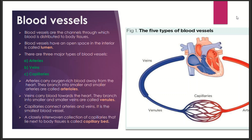Blood vessels have an interior space called the lumen. Blood vessels are of three types: first, arteries; second, veins; and third, capillaries.